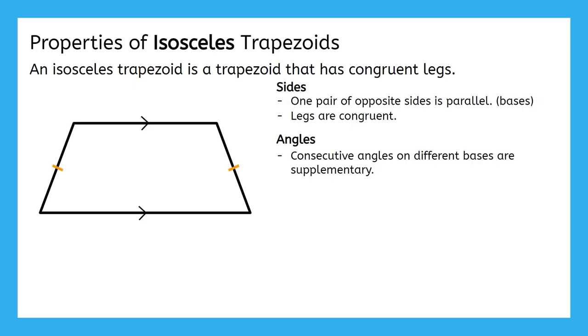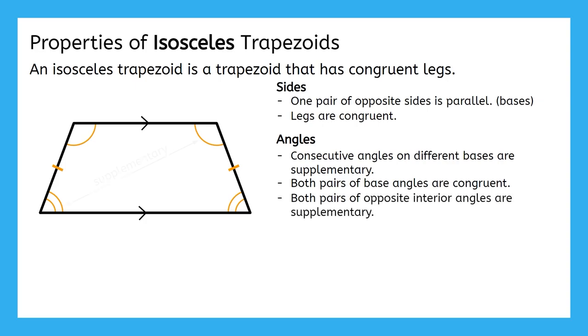Just like an isosceles triangle, having congruent legs also creates some angle relationships. Both pairs of base angles are congruent. That means that these angles are congruent to each other, and these angles are congruent to each other. It also means that the opposite interior angles are supplementary. You can show why this is true by using the substitution property of equality, but I'll leave that for you to take on as a challenge opportunity. Lastly, the diagonals are congruent.